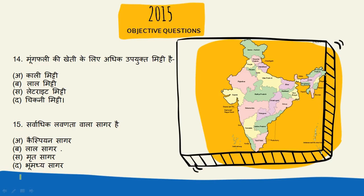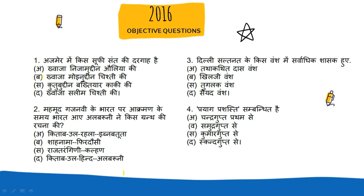Next question: Mungfali ki kheti ke liye adhik upyukt mitti hai. To jo iska answer hai woh hai Kali mitti. Kali mitti jo hai mungfali ke utpadan ke liye sabse zyada upyukt mitti hai. Yahan se 2016 ke objective questions start hote hain.